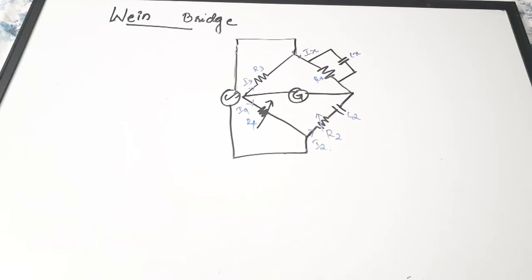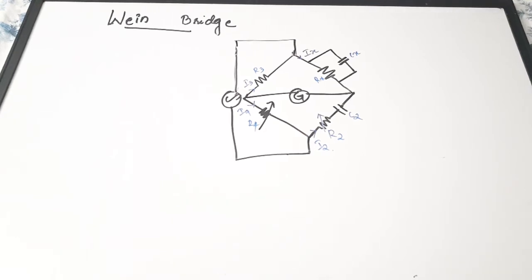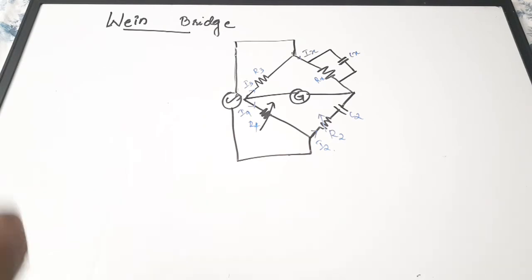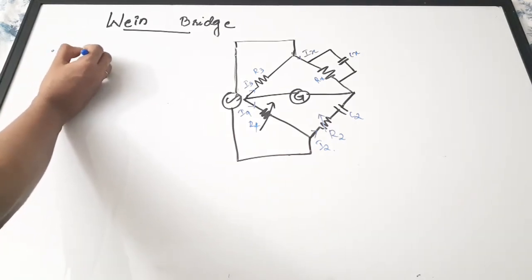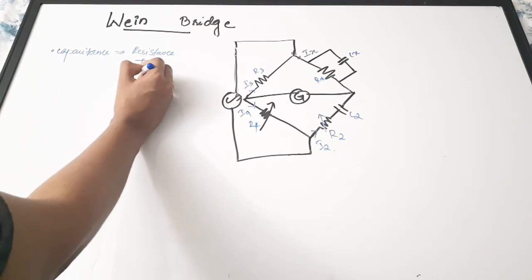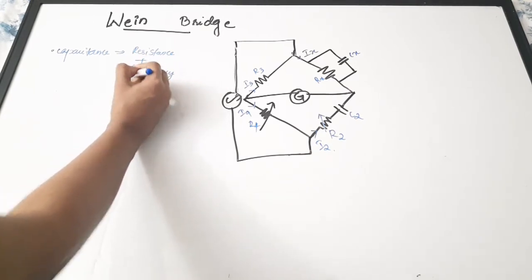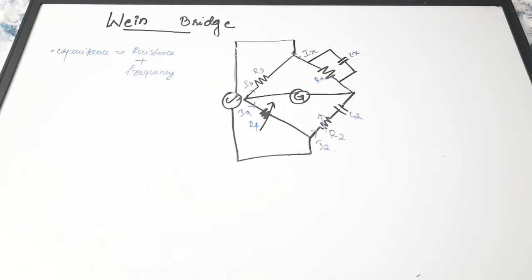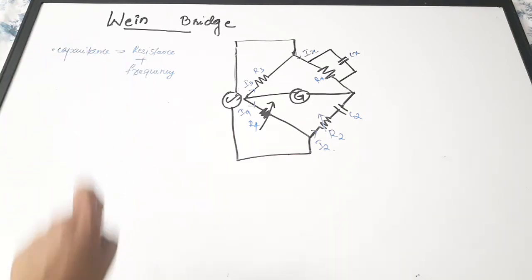The main purpose of the Wien Bridge is precision measurement of capacitance in terms of resistance and frequency. We have discussed another bridge called the Schering bridge, which is also used for finding capacitance. In the Wien Bridge, we find capacitance in terms of resistance and frequency. It is also used for measuring audio frequency.